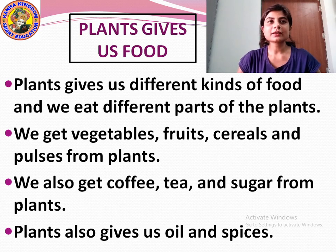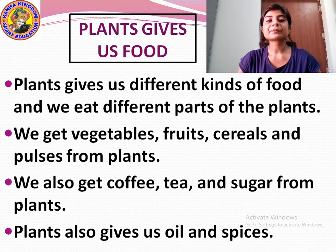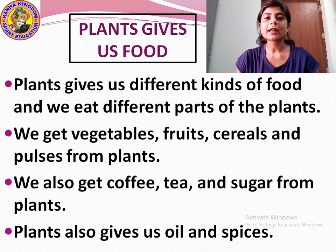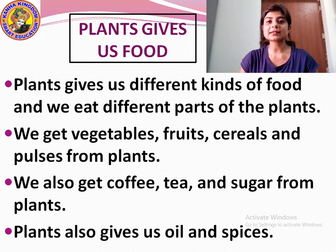Plants give us different kinds of food and we eat different parts of the plant. Sometimes we eat root, sometimes the stem, sometimes flower, sometimes fruit and sometimes leaves. From plants we get vegetables, fruits, cereals and pulses.